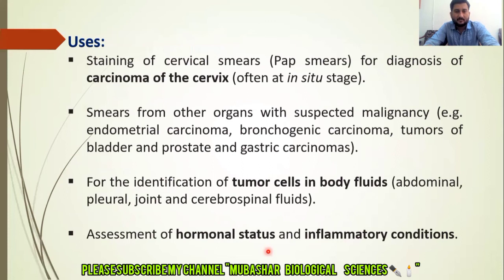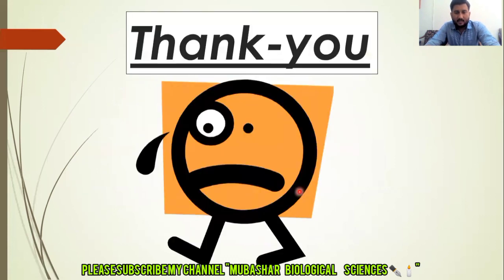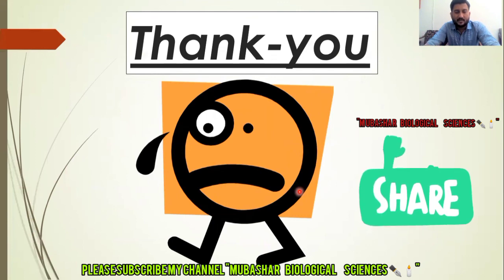The Pap stain can be used in several ways. First, it is used for the diagnosis of carcinoma of the cervix, as originally demonstrated by Dr. George Papanicolaou. Second, it is used for smears from other organs with suspected malignancy. Third, it is used for identification of tumor cells in body fluids. Fourth, it is used for assessment of hormonal status and inflammatory conditions. This concludes our discussion of the third step of cytological preparation — staining. Thank you so much for watching. Goodbye, take care.